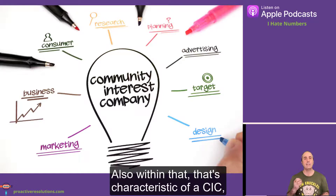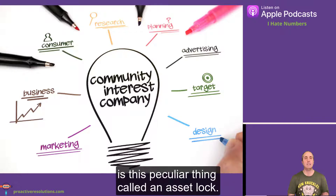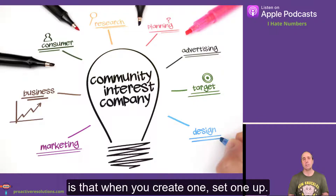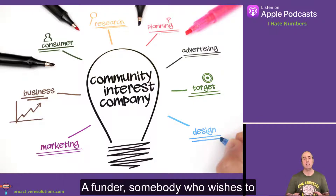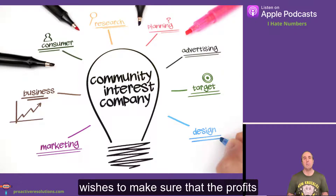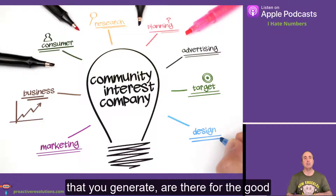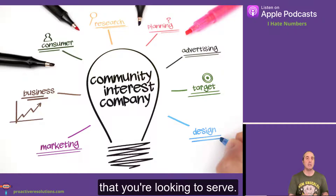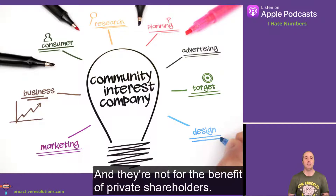A key characteristic of a CIC is this thing called an asset lock. The beauty behind a CIC is that when you set one up, a funder — somebody who wishes to invest time and energy in you — can be assured that the profits you generate are there for the good of your community organisation and to benefit the community you're looking to serve.